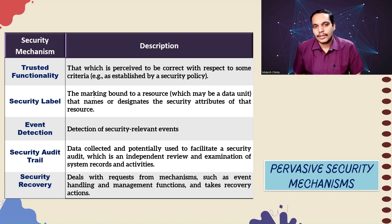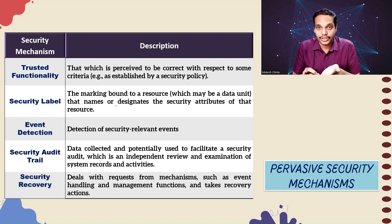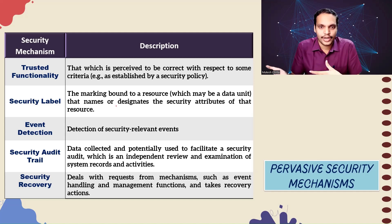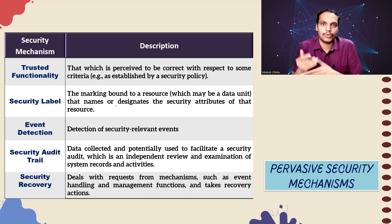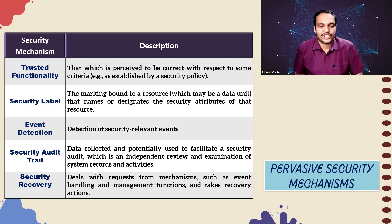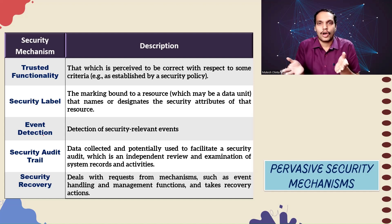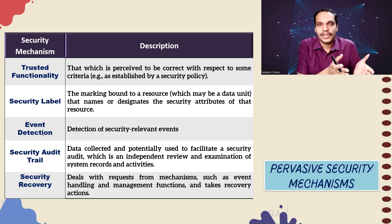Next is security label — the marking bound to a resource that names or designates the security attributes of that resource. Similar to labeling a book with your name and subject, it is a marking given to a resource or data unit designating its security service type, security attributes, who it belongs to, and who can access it. Third is event detection — mechanisms for detecting security-related events, such as intrusion detection systems and intrusion prevention systems.